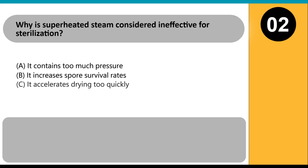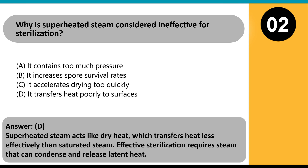Why is superheated steam considered ineffective for sterilization? A. It contains too much pressure. B. It increases spore survival rates. C. It accelerates drying too quickly. D. It transfers heat poorly to surfaces. Answer: D. Superheated steam acts like dry heat, which transfers heat less effectively than saturated steam. Effective sterilization requires steam that can condense and release latent heat.